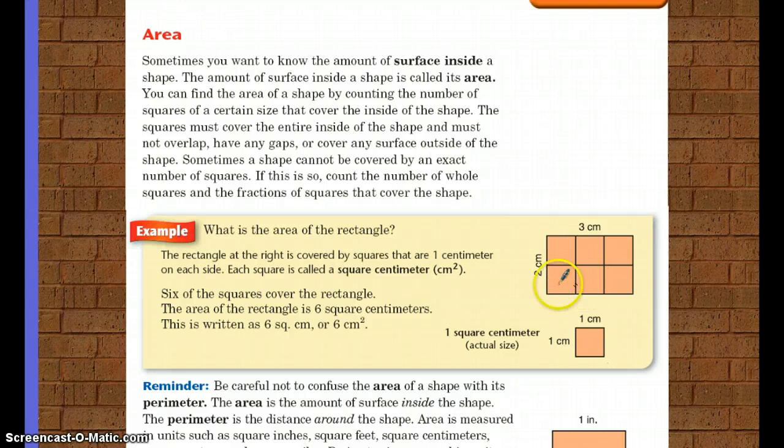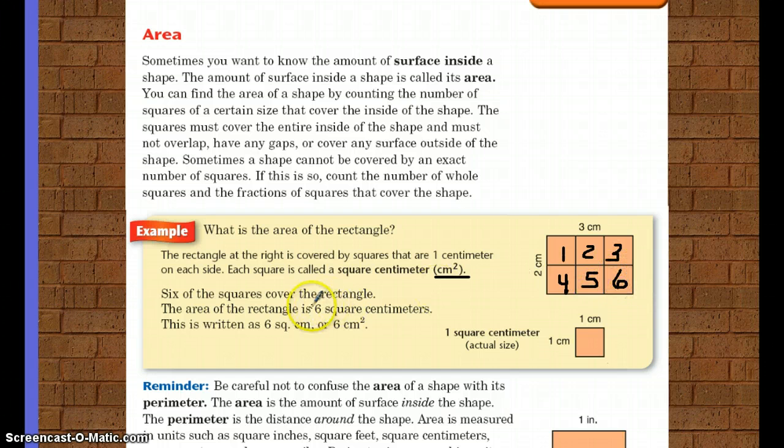The rectangle on the right is covered by squares that are one centimeter on each side, so each square is called a square centimeter. Notice that's written here for you: centimeters squared. Six of the squares cover the rectangle. Here's one, two, three, four, five, and six. So we would say the area of the rectangle is six square centimeters. This is written as six sq cm abbreviated, or we can just do it this way and do six centimeters with the little squared symbol up at the top.